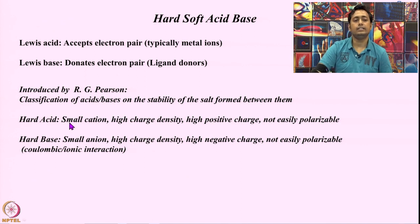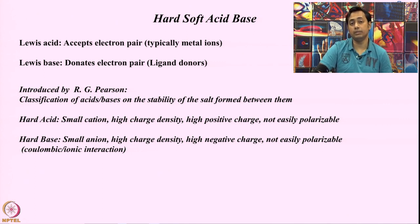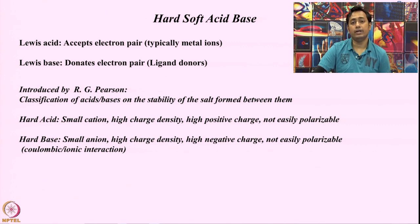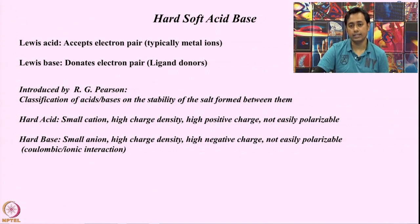A hard acid is a small cation with a very high charge density, generally combined with a high positive charge, and they are generally weakly polarizable. If you have very small electron density present around the system with a very high charge, that means the charge density is very high, making it very difficult to polarize. This less polarizable system is known as a hard acid.